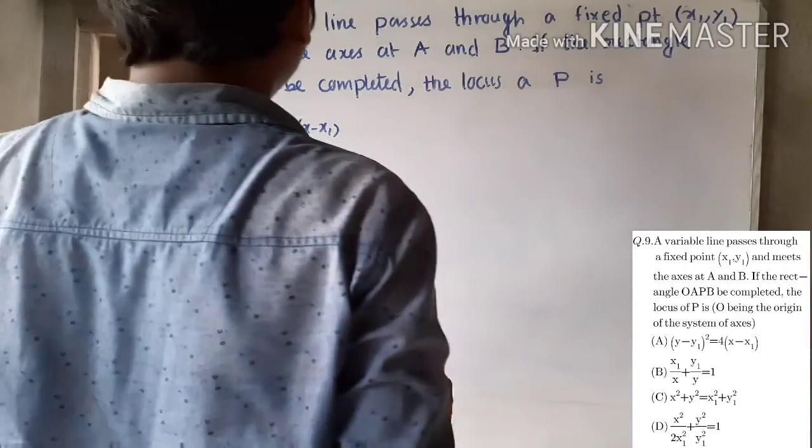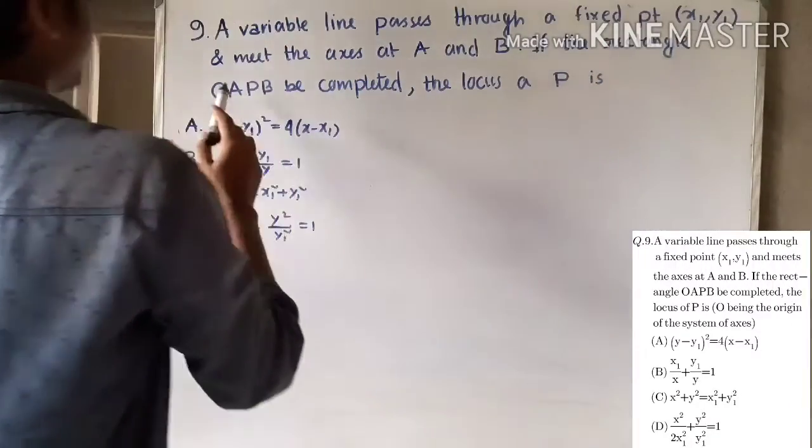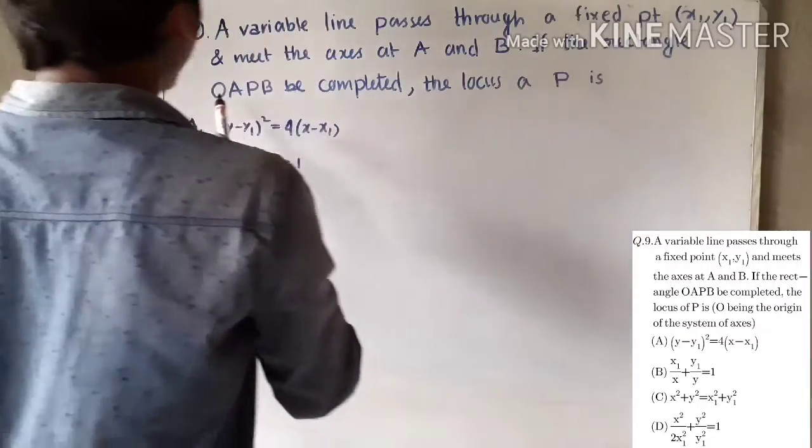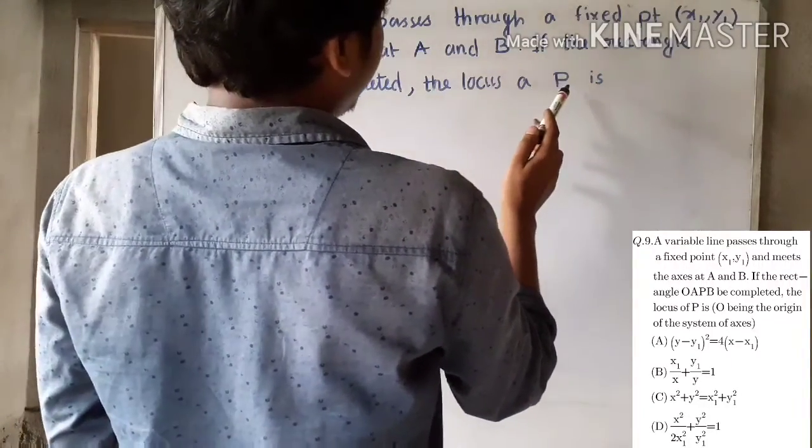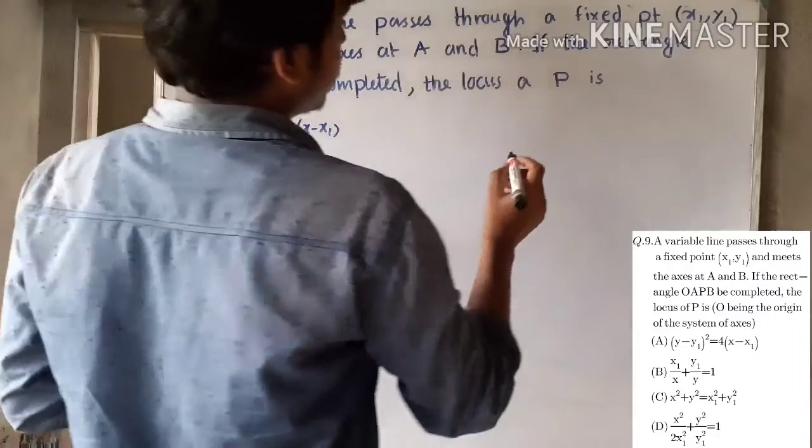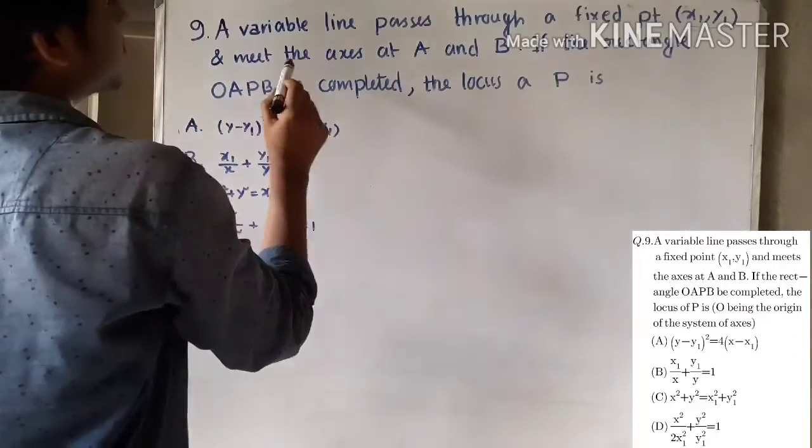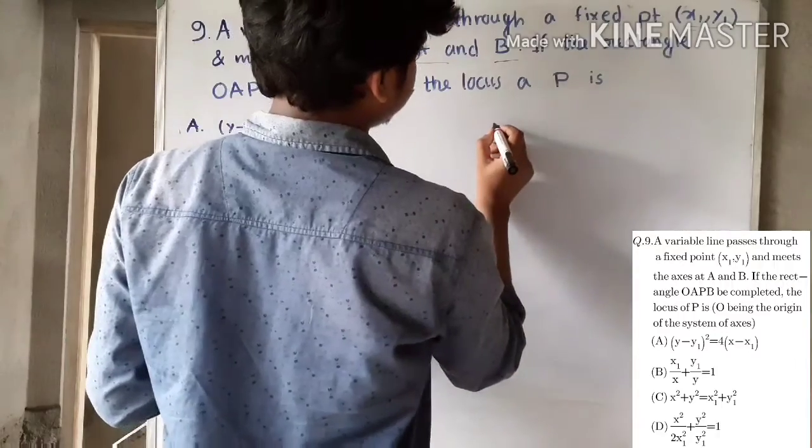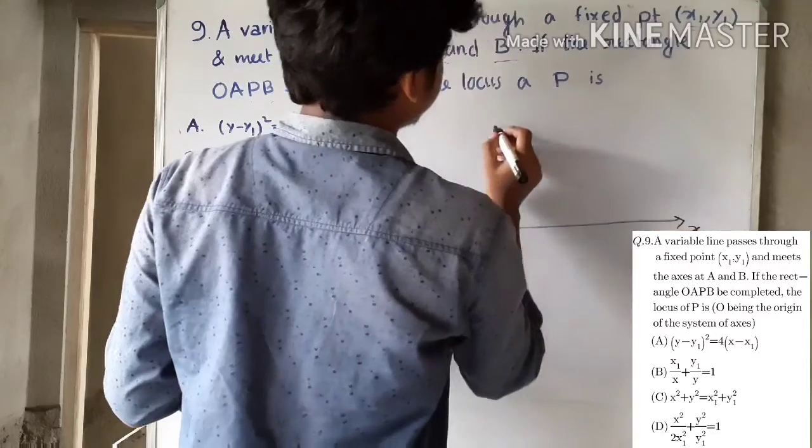Question number nine: A variable line passes through a fixed point (x1, y1) and meets the axes at A and B. If the rectangle OAPB is completed, then the locus of P.